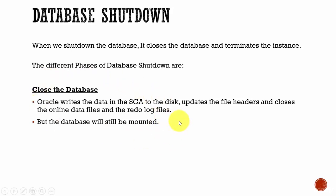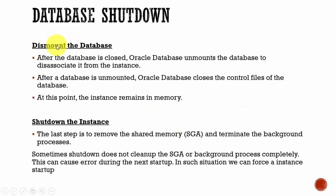Once it closes the database, then it dismounts the database. When we say dismount, the Oracle database disconnects from the associated instance. Just like in the startup, how in the mount mode a database was associated with an instance, in the same way, in a dismount mode, the associated instance is dismounted with the database. Once the database is unmounted, the Oracle database will close all the control files.